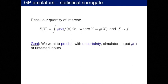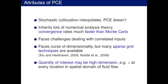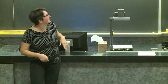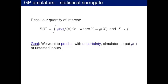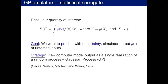Onto Gaussian processes. Here the idea is that we're emulating the computer model itself. The distribution of the inputs doesn't matter for the emulation — which is useful. Our goal is to predict with uncertainty what the computer model looks like at untested inputs. Our strategy is to view the computer model as a singular realization from a random process — specifically Gaussian processes, because Gaussians are easy to work with and tractable. We have the sort of inventor of this approach in the room in front of us — Jerry Sacks, along with others.